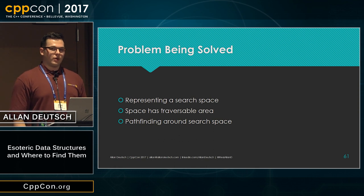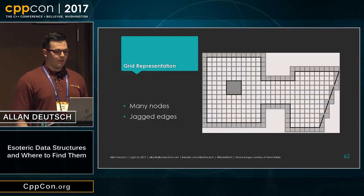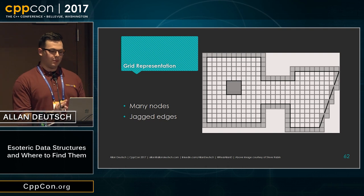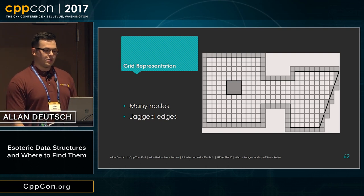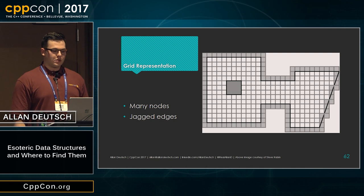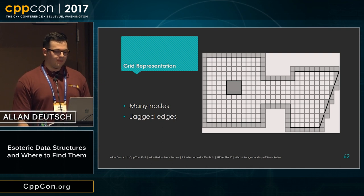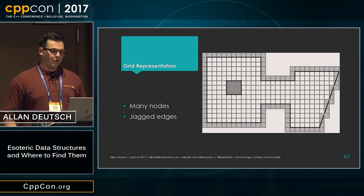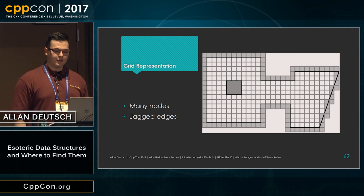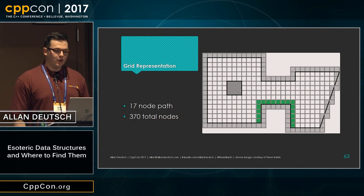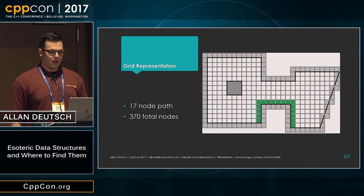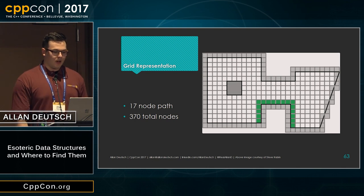Some of the other representations we might have for this are a grid. Looking at a grid with an example map, you can see that there are a lot of nodes, and the edges are quite jagged — it doesn't really smoothly fit the walls. If we want to pathfind from the little nook in the bottom left on the right side of the map to the nook in the bottom right corner, the path takes 17 nodes, and there are 370 total nodes required to represent this map. So that's not great and we can probably do a little bit better.